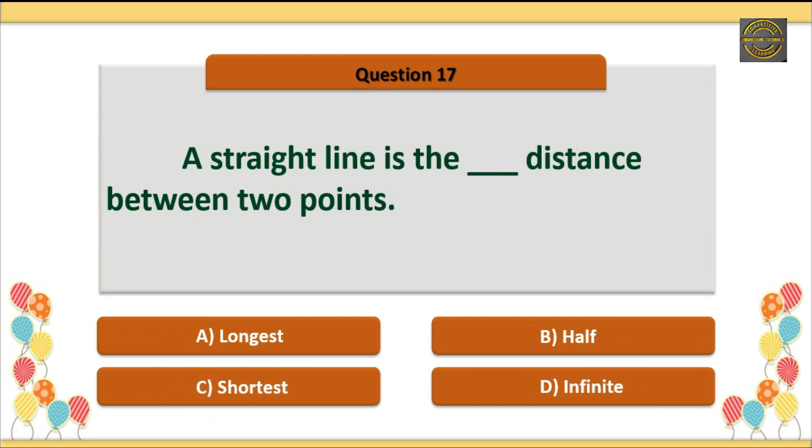Question 17: A straight line is the distance between two points. Option C is correct: Shortest.